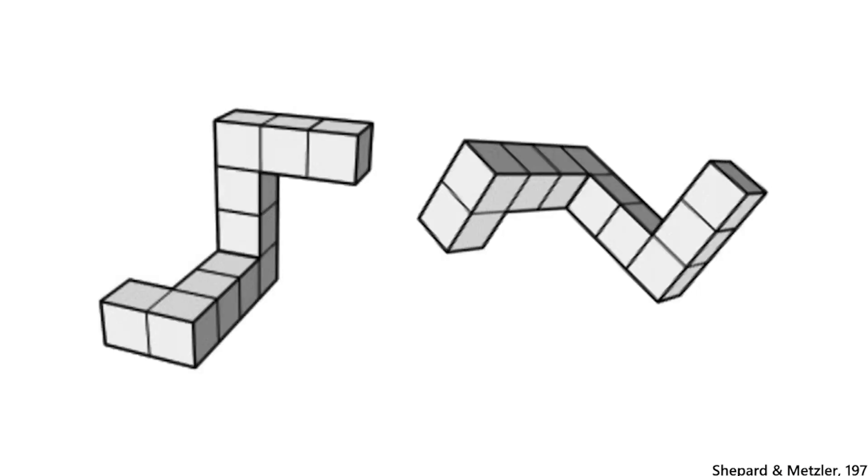This is an example of a mental rotation problem. The idea is you have to decide if these two objects are the same or if they're mirror images of each other. For this example, if you turn the object on the left and mentally turn it in your head, you can see that these two are different. They're mirror images, just like your two hands are. So this is an example of a mental rotation task, which is one of the tools psychologists use to measure spatial thinking.